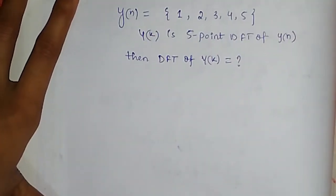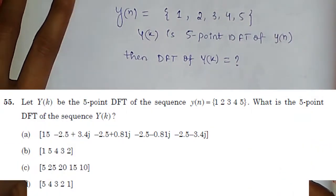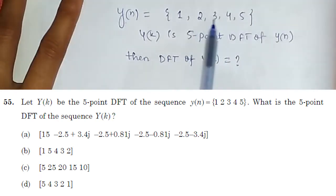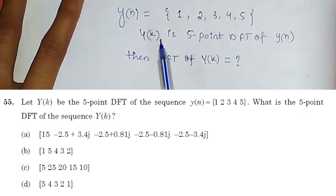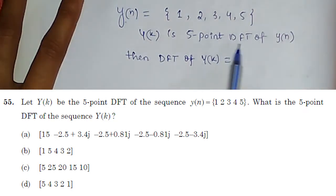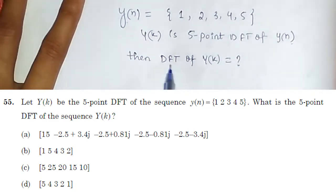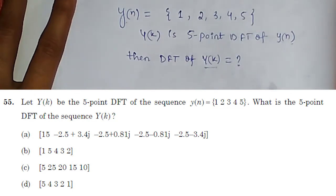Hello friends, welcome to Gate Kyan. In this question we have been given a sequence y[n] = {1, 2, 3, 4, 5}, and Y[k] is the five-point DFT of y[n]. We have to find the DFT of Y[k], so to get the DFT of Y[k] we will derive an expression for Y[k].